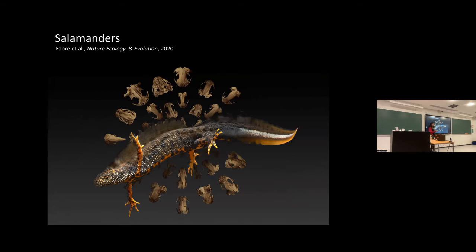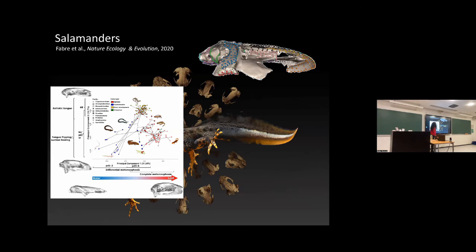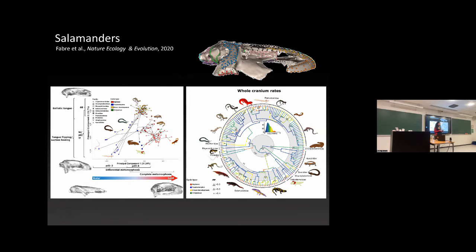Amphibians are really the best vertebrates, and salamanders in particular are especially amazing. Using our dense skull landmark dataset across salamanders and analyzing morphospace, you see a really great partitioning of pedomorphic, biphasic, and direct-developing salamanders when you color by life history mode. Other factors don't partition morphospace nearly as well — it's really about life history in salamanders. Because salamanders have so many transitions in life history mode, every transition in life history is associated with an uptick in evolutionary rate.